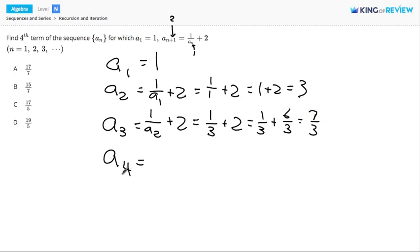Now we can find our fourth term a4. It's going to be 1 divided by the previous term, a3, plus 2. Well, a3 is 7 thirds, and if you take the reciprocal, 1 divided by a fraction, that flips the fraction upside down, so we have 3 sevenths plus 2.